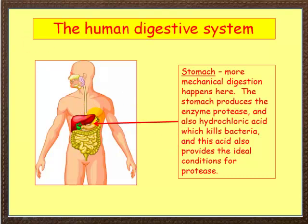So we've gone down the oesophagus, here is the stomach. More mechanical digestion happens here. The stomach churns away, it rotates, it moves food around. Every 90 seconds the food gets churned around here.